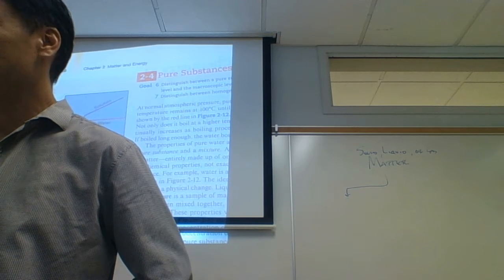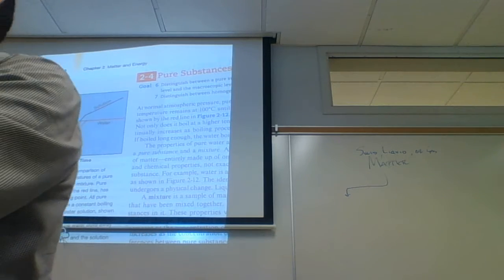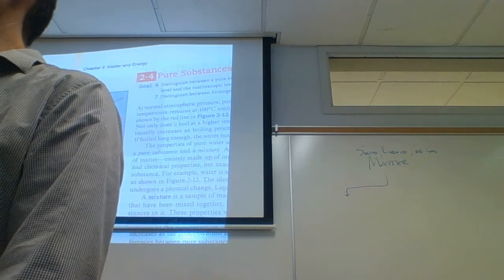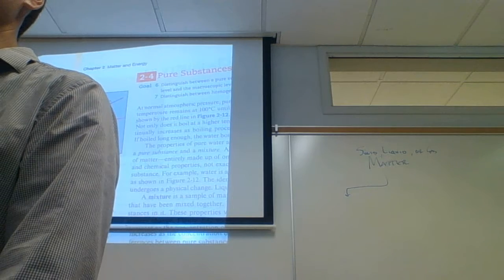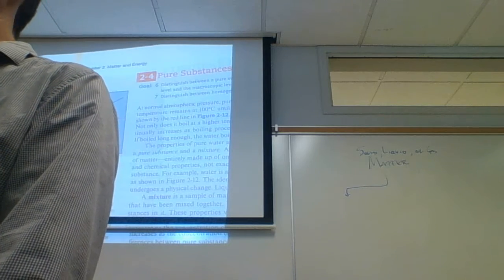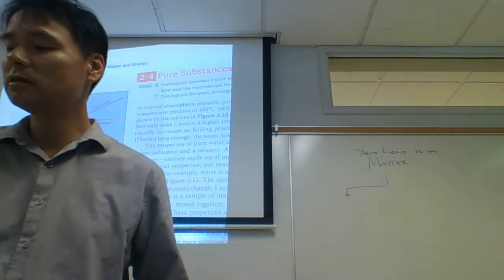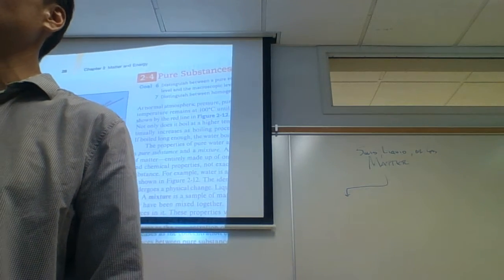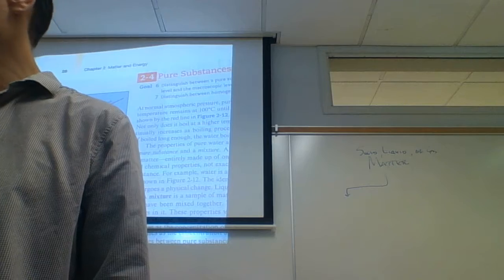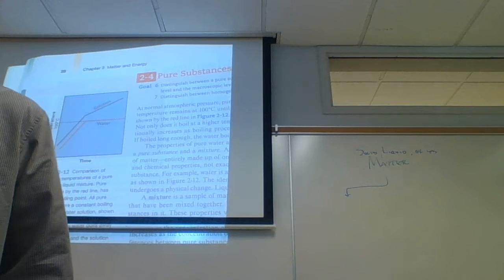Chemical properties: if somebody gave you a liquid and you test it for flammability and it catches fire, best not to drink it — even if it looks like water. There are a lot of things that look like water. The smell can also be an instant indication — that's a physical property. Flammability would be a chemical property. We use properties to identify whether something is pure or a mixture.